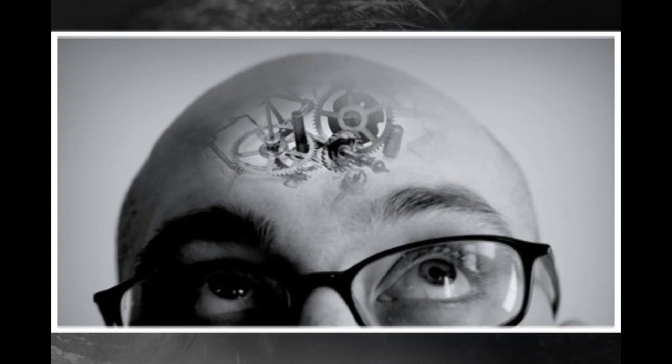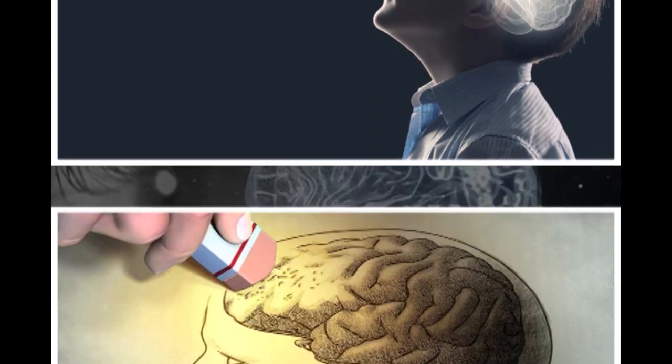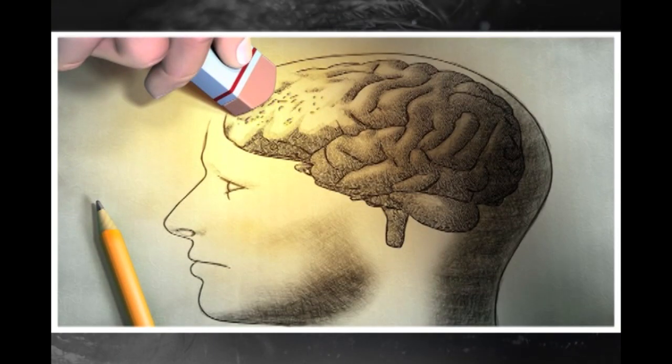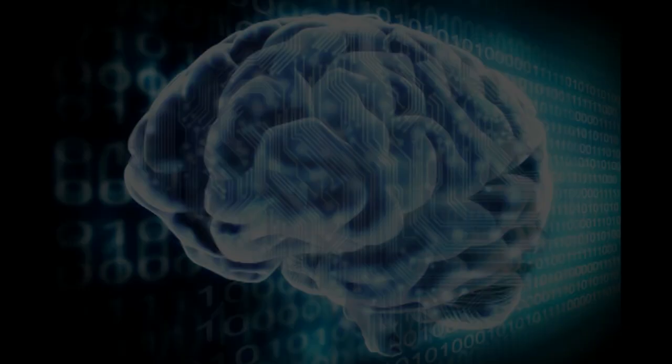Memory: the information we process and learn is recognized and stored in the memory system. Memory also helps us to easily retrieve the stored information when it is required for use. For example, writing answers in an examination.